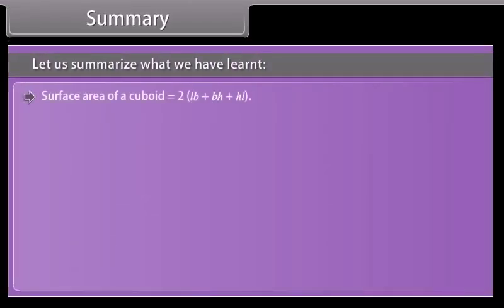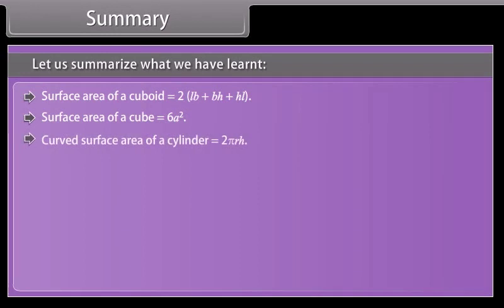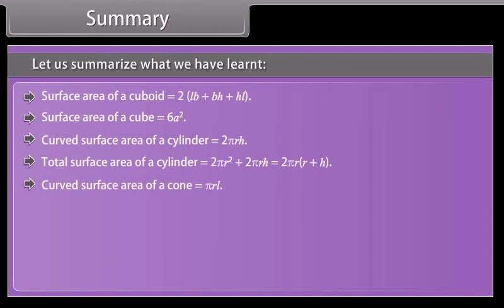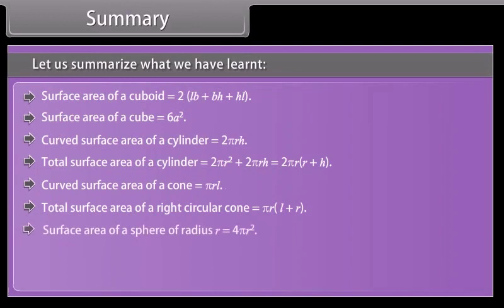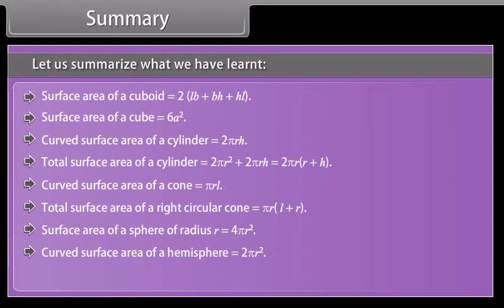Summary: Surface area of a cuboid = 2(lb + bh + hl). Surface area of a cube = 6a². Curved surface area of a cylinder = 2πrh. Total surface area of a cylinder = 2πr² + 2πrh = 2πr(r + h). Curved surface area of a cone = πrl. Total surface area of a right circular cone = πr(l + r). Surface area of a sphere = 4πr². Curved surface area of a hemisphere = 2πr². Total surface area of a hemisphere = 3πr².